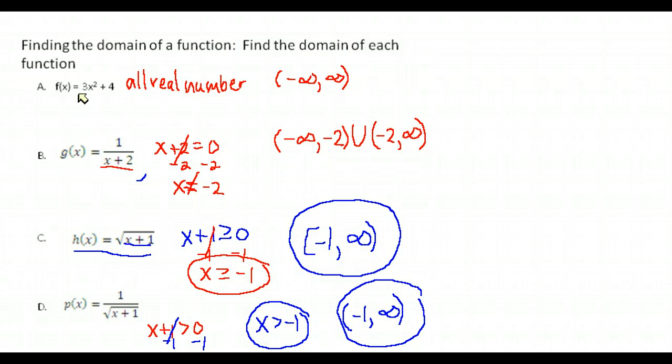So there's just a quick rundown of finding domains of basic functions. Again, if you have a polynomial function, all real numbers is usually your domain. The only place you're going to run into trouble in the domain and have to exclude numbers is if you have an x in the denominator or you have an x under square root.